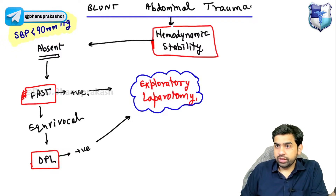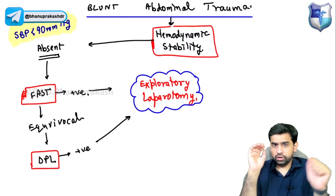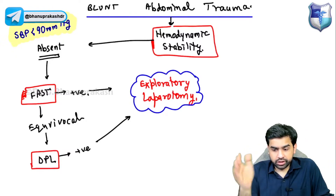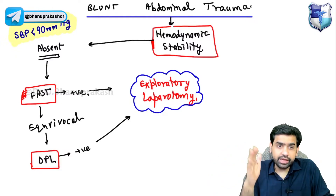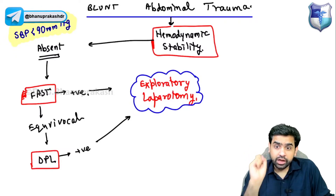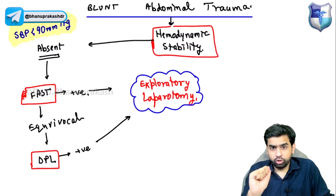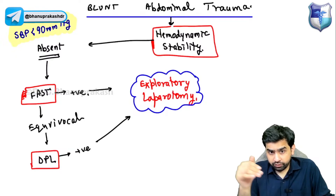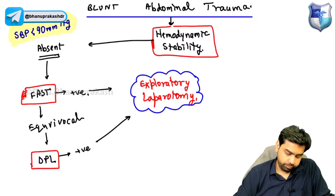To summarize so far: in blunt abdominal trauma, first check for peritonitis — if present, go straight to exploratory laparotomy. If peritonitis is absent, check hemodynamic stability. If the patient is unstable (SBP less than 90 mmHg), do FAST. If FAST is positive, go to laparotomy; if FAST is equivocal, do DPL, and if DPL is positive, go to laparotomy.